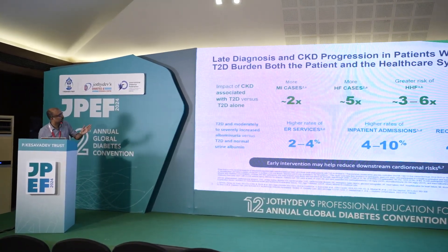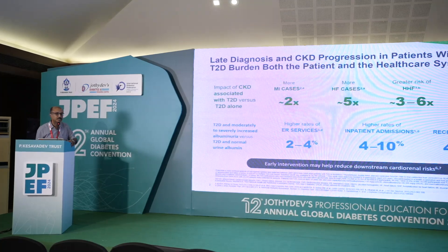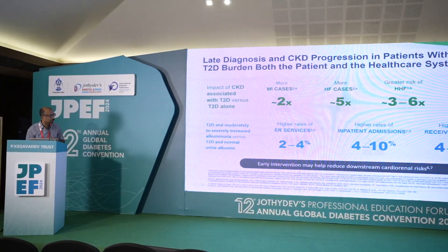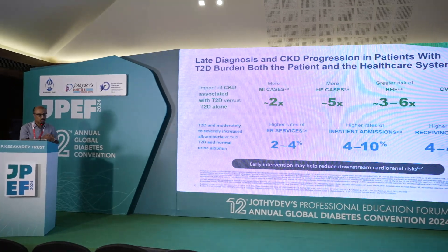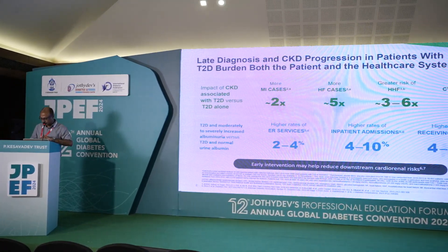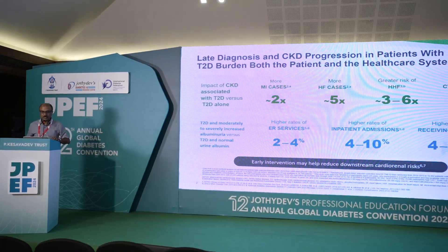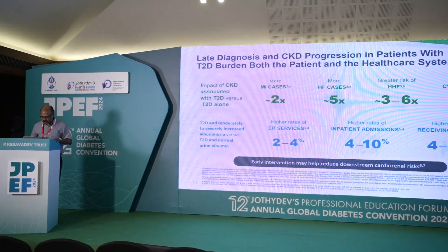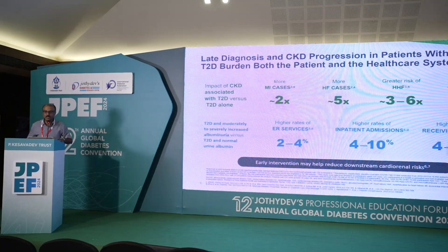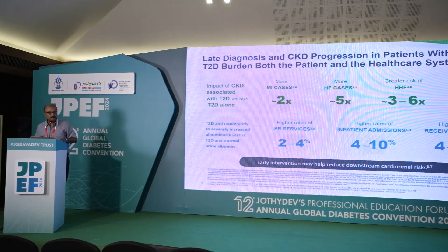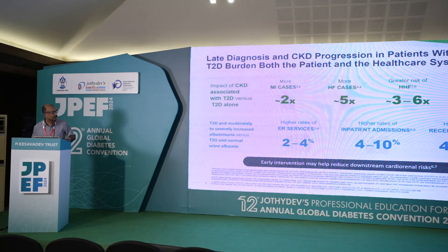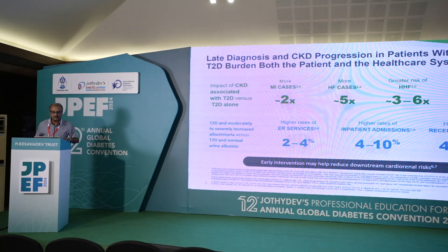If you look at people with albuminuria, you can see that having albuminuria makes you highly likely to require inpatient hospital admissions or ER services. Basically, if you have either a reduced kidney function as evidenced by eGFR, or an elevated albumin in your urine, you run a risk of having many other diseases beyond kidney disease.